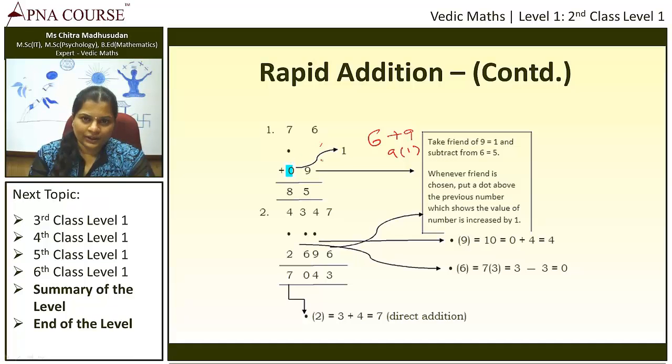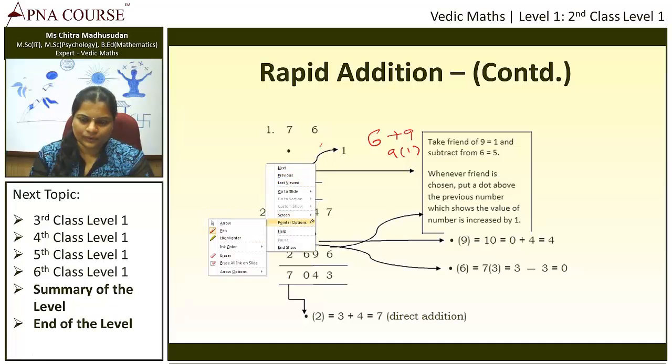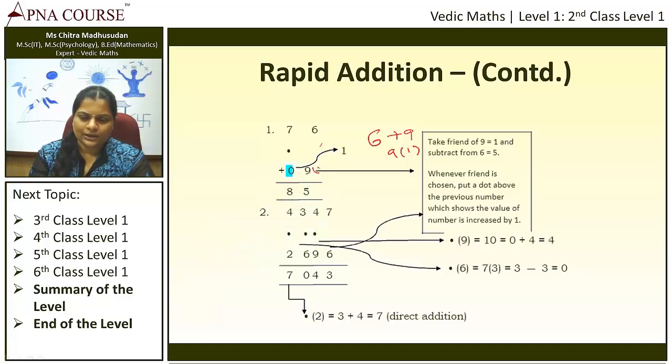Whenever direct addition is not possible, you are taking the help of friend, which means 10th compliment of that number. So in this case, 9's friend is 1. Whenever you should remember that friend is chosen, you should keep a dot over the number here. So 0 will become 1.